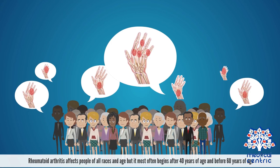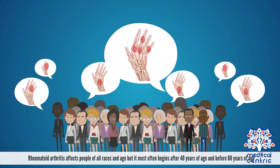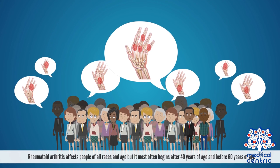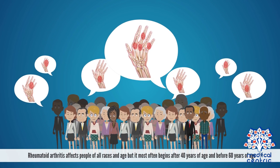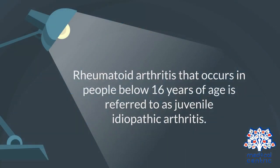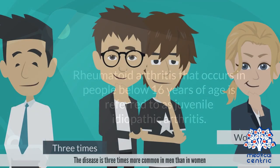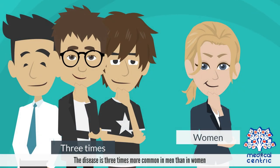Rheumatoid arthritis affects people of all races and age, but it most often begins after 40 years of age and before 60 years of age. Rheumatoid arthritis that occurs in people below 16 years of age is referred to as juvenile idiopathic arthritis. The disease is three times more common in men than in women.